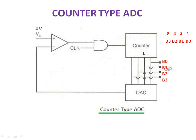Initially the counter will be in reset position. Reset means all the bits will be 0. The initial value of the counter is 0 — that is 0 0 0 0. The bit weightages are 1, 2, 4, 8. If 0 0 0 0 is given as input to the DAC, the output of the DAC will be 0 volt. That 0 volt is given to the inverting terminal of the comparator.